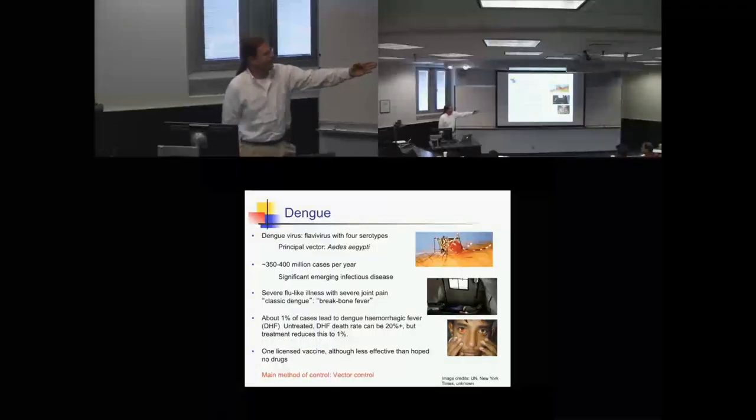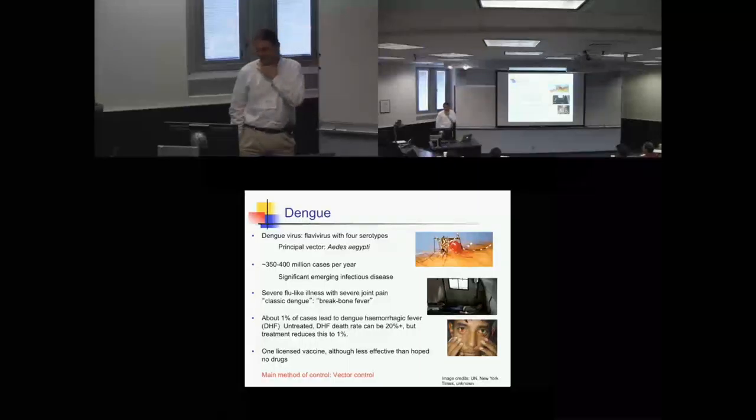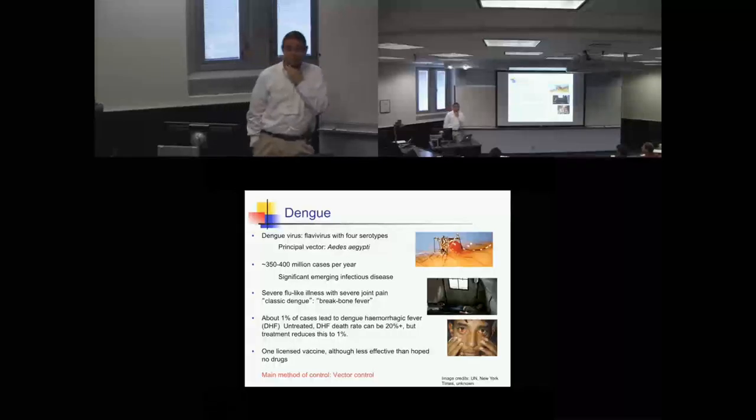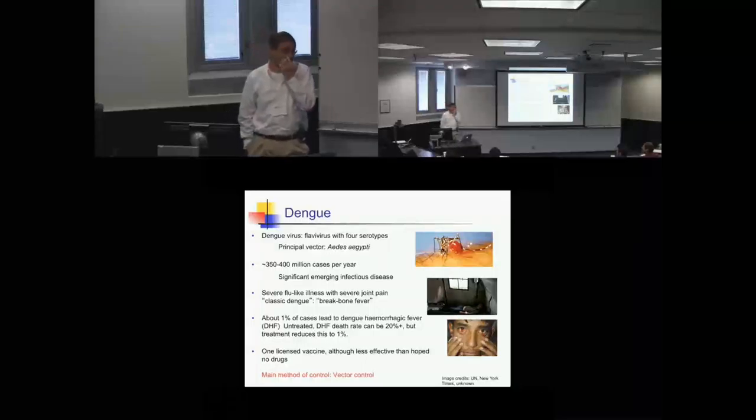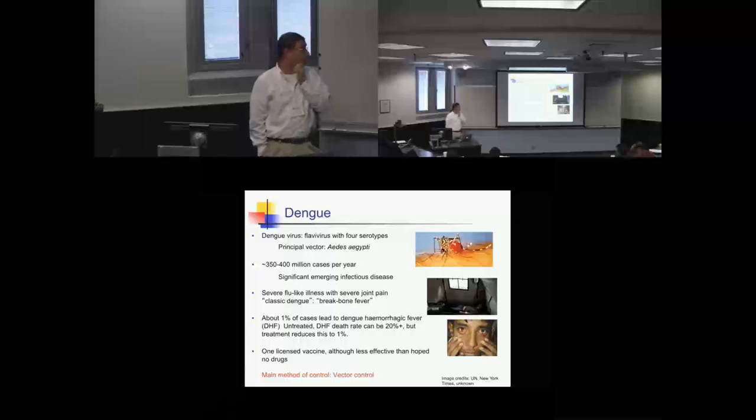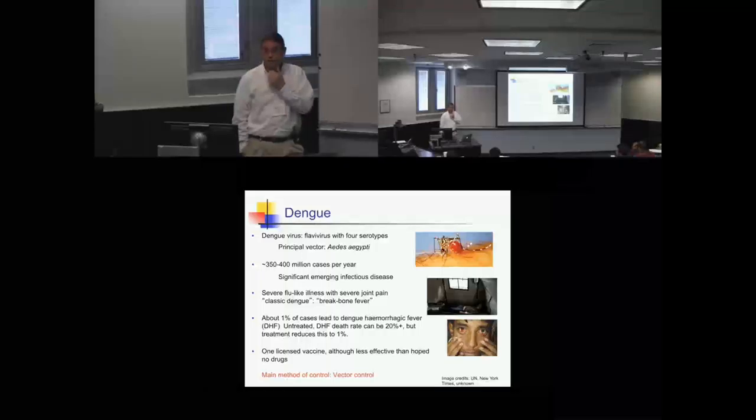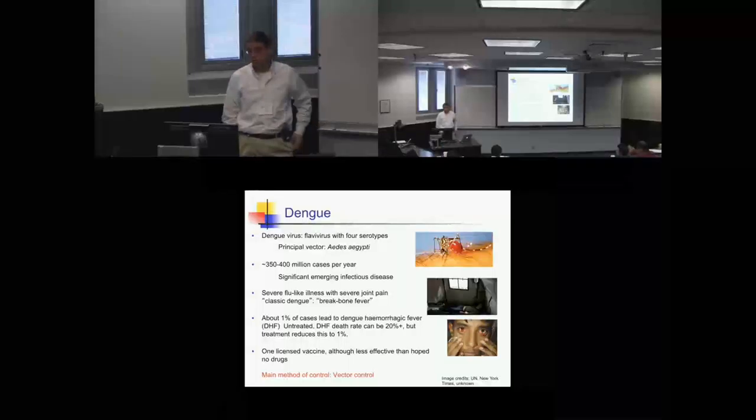But because you get this large disease burden, it has a really important impact on public health systems around the world, particularly when it occurs as large epidemics. There is a vaccine, but this vaccine is nowhere near as effective as we would like. There are no antiviral drugs. So up until now at least, and for the foreseeable future, the main control method for dengue is vector control, so controlling the insects.